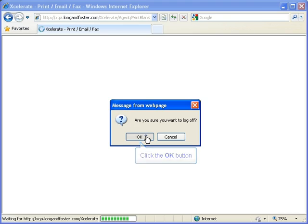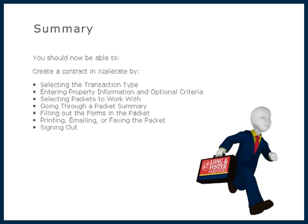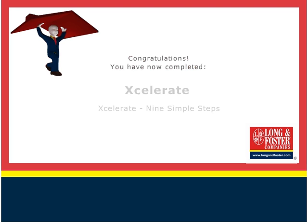To log off Accelerate, click the Log Off link in the upper right-hand corner of the page. A window will open and ask you if you are sure you want to log off. Click OK to log off Accelerate. This concludes this video on how to create a new contract in Accelerate using the 9 simple steps. Additional training videos on this and other topics are on the Long and Foster Cafe. We thank you for viewing this video.